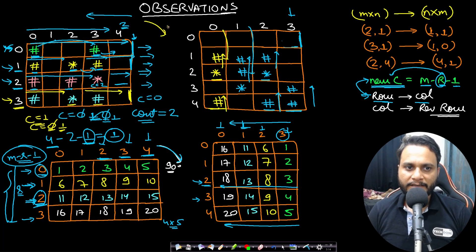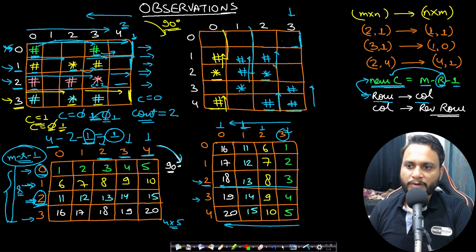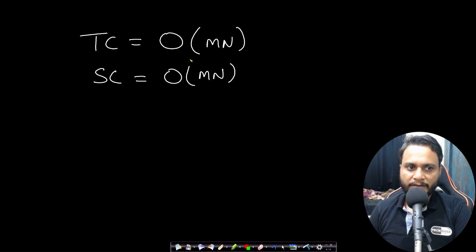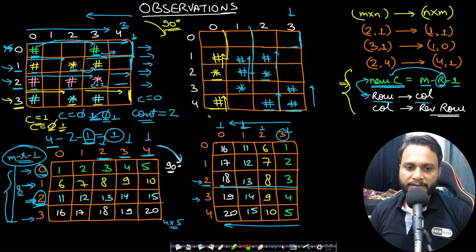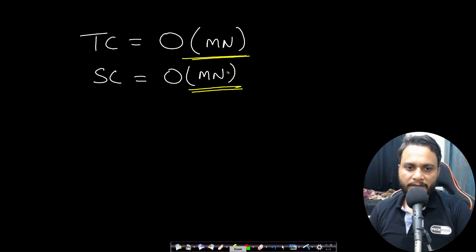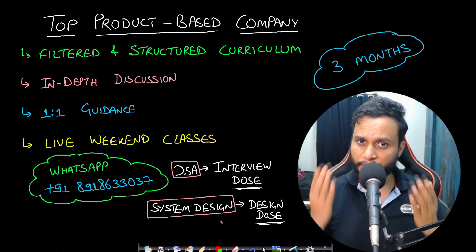After processing all rows, we have the complete 90-degree rotation equivalent matrix. Since we iterate the entire matrix once, the time complexity is O(mn). The space complexity is O(mn) if we count the resultant matrix as extra space, or O(1) if we exclude the output.